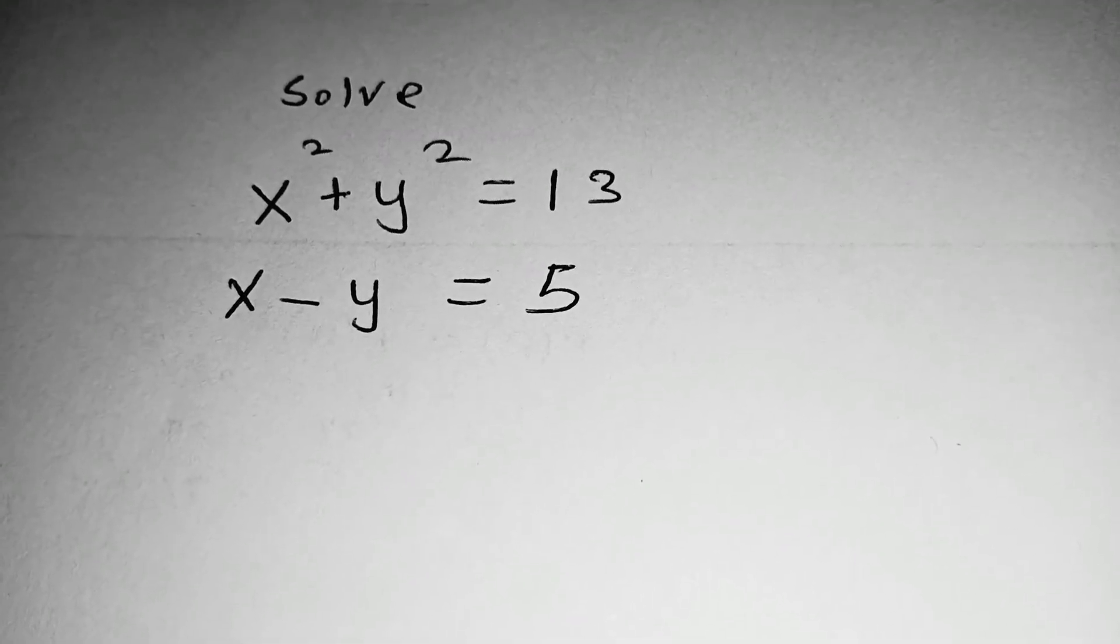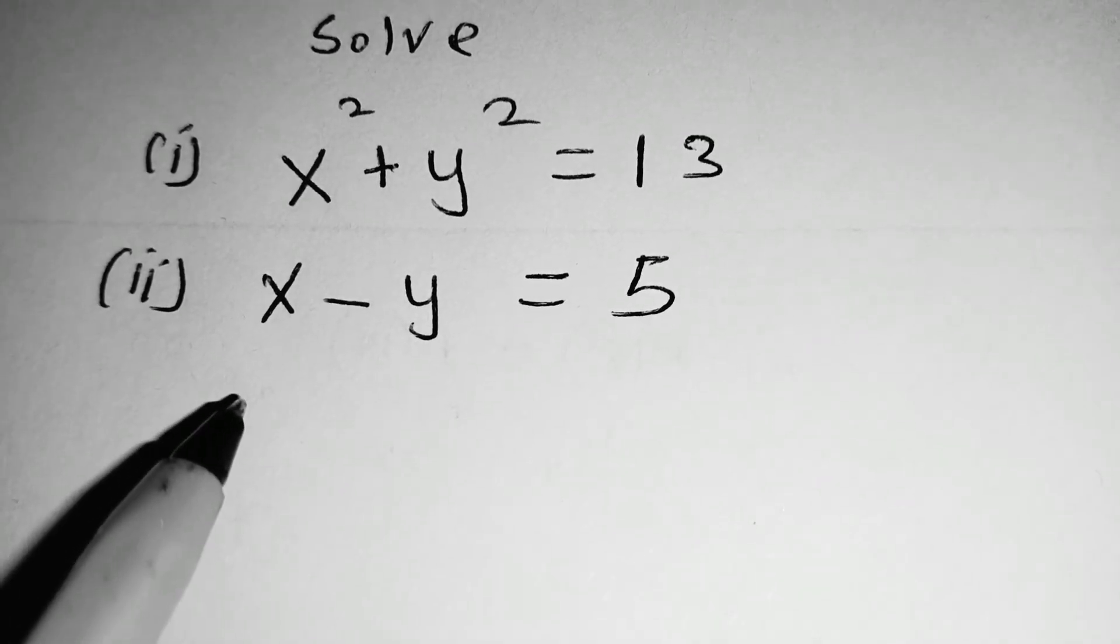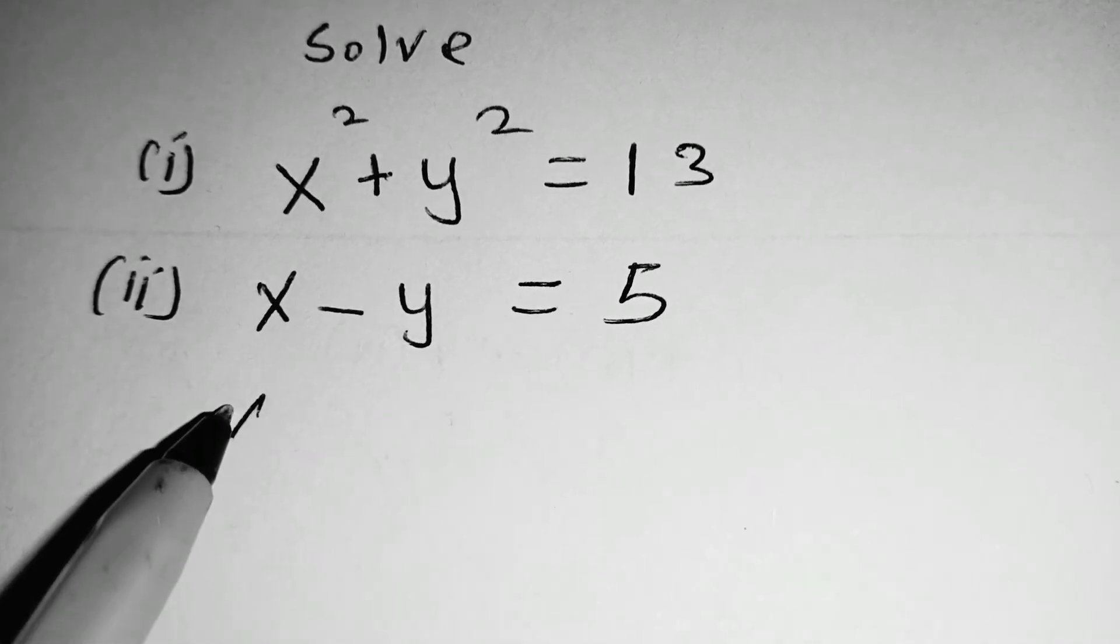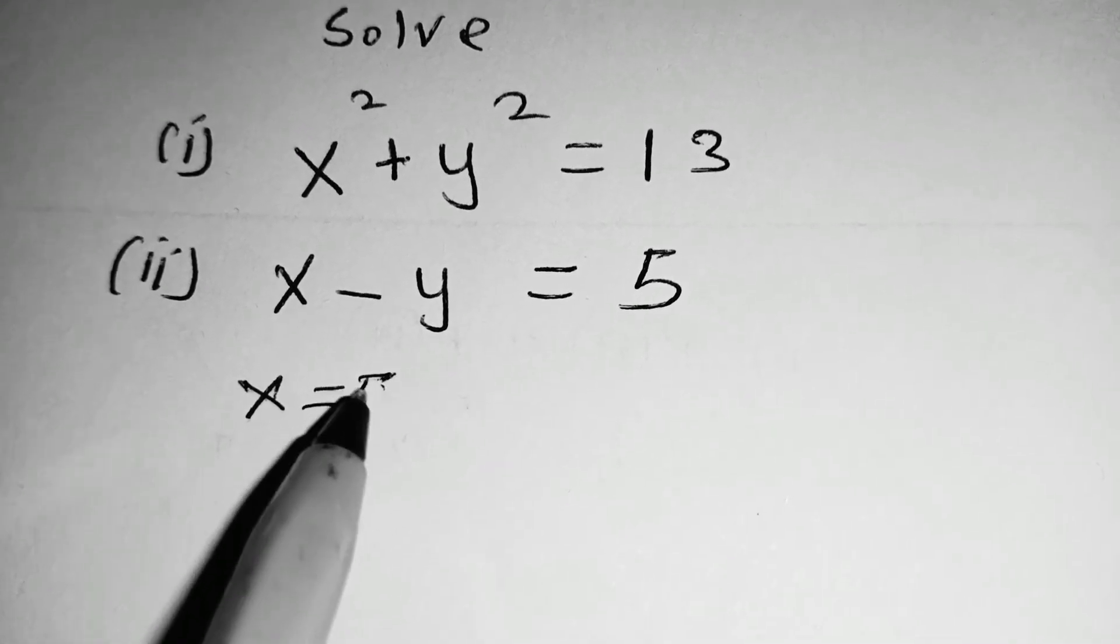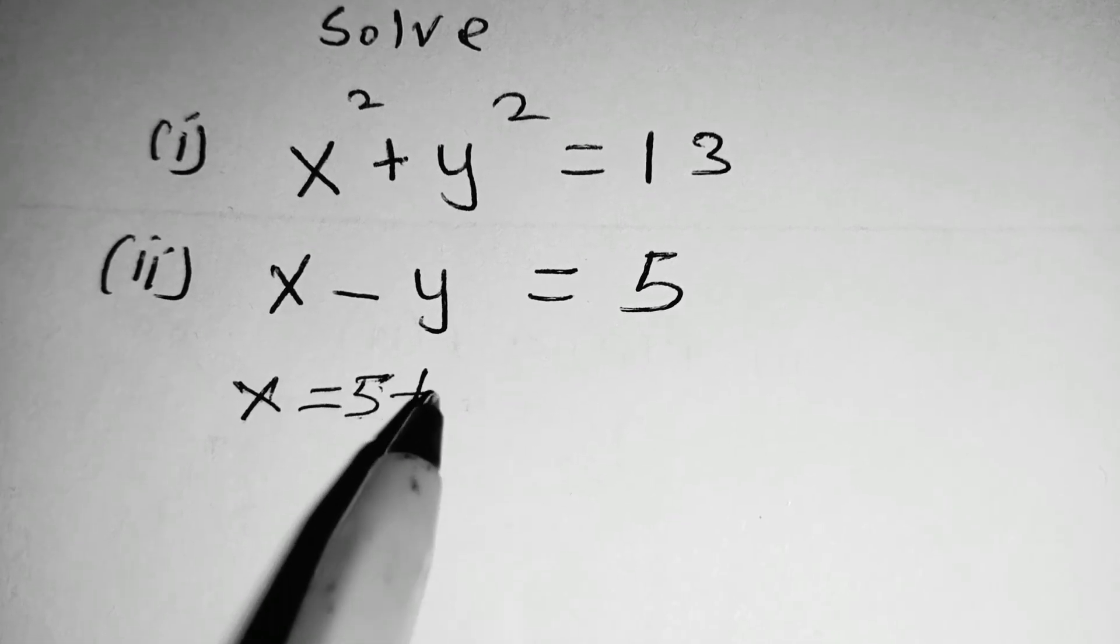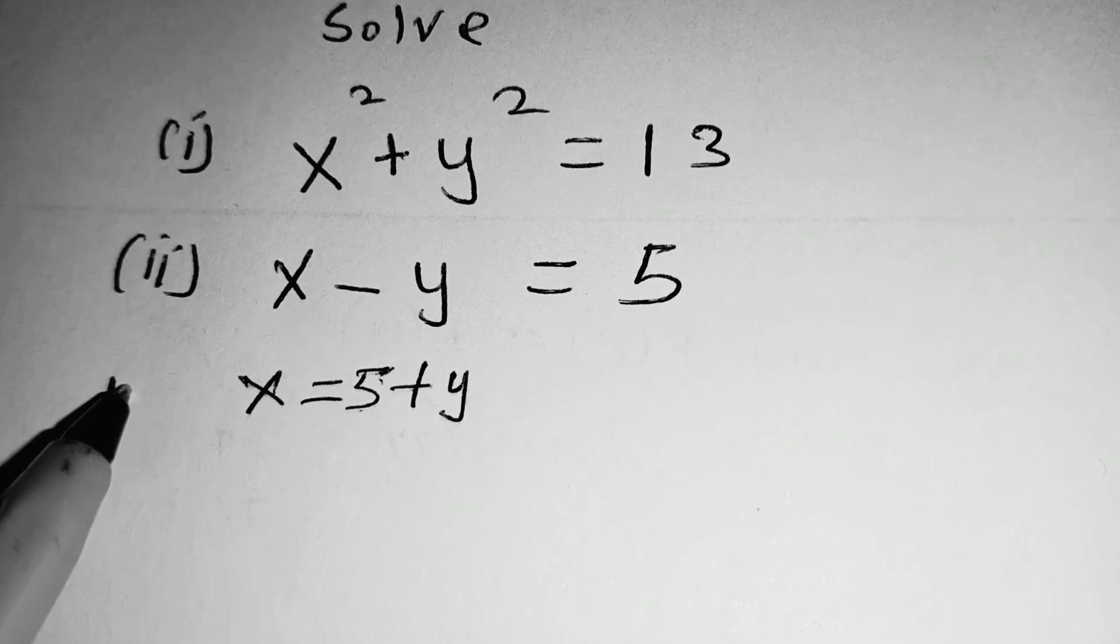So to do that, we label these equations. From equation 2, we make x the subject of the formula so that x is equal to 5 plus y, and we call this equation 3.